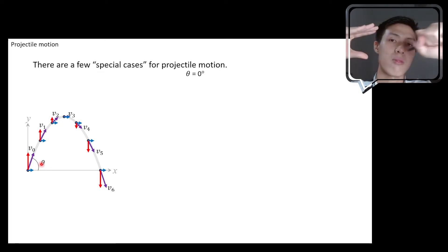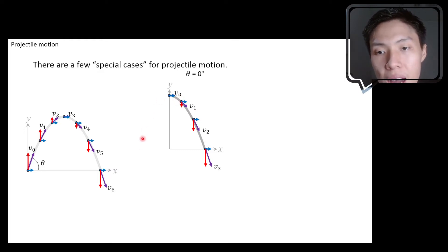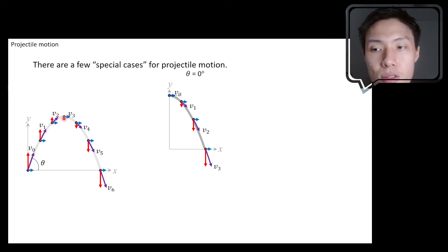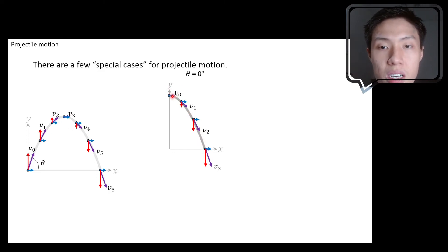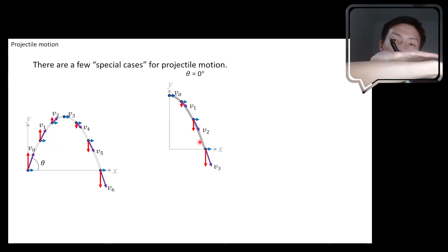If you push something out of the cannon in the horizontal direction, your path will still be a parabolic path, but the parabola is only half a parabola — because you are starting from the highest point. Usually you start somewhere below, launch something upwards, and it falls back down. But if you start your motion at the highest point, you trace only half a parabola. This is the path traced by an object launched at an angle of zero degrees with respect to the horizontal.